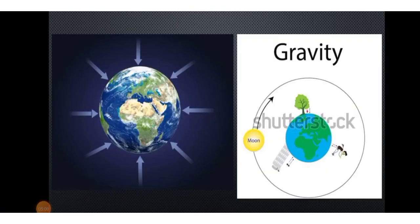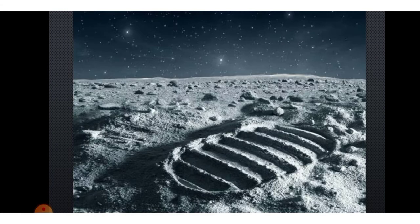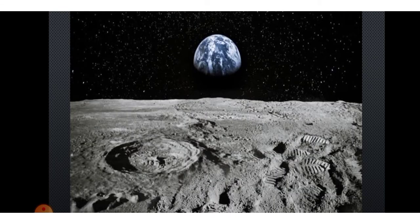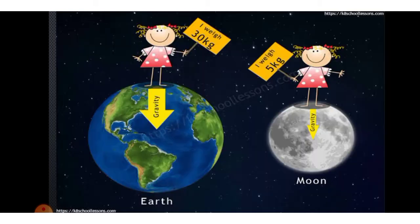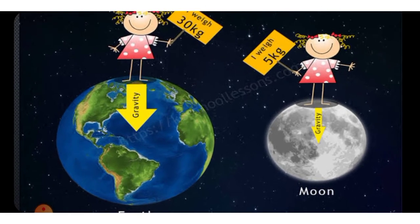If we see the conditions on the moon, the gravitational force on the moon is one sixth of that on the earth. Gravitation is the earth's attractive force which keeps all things in place. That means the gravitational force on the moon is one sixth of that on the earth. So your weight on the moon is six times less than your weight on the earth.